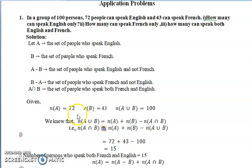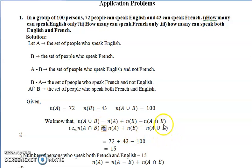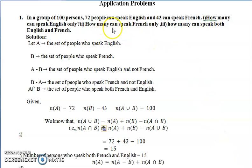From the given data: n(A) = 72 (people who speak English), n(B) = 43 (people who speak French), and n(A∪B) = 100 (the group total). Using the formula n(A∪B) = n(A) + n(B) − n(A∩B), we derive the formula for n(A∩B). Replacing the values and simplifying, we get 15 — which means the number of persons who speak both French and English is 15.